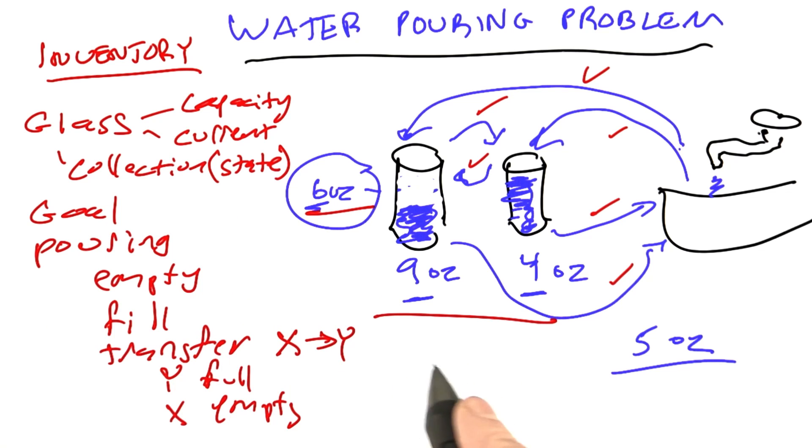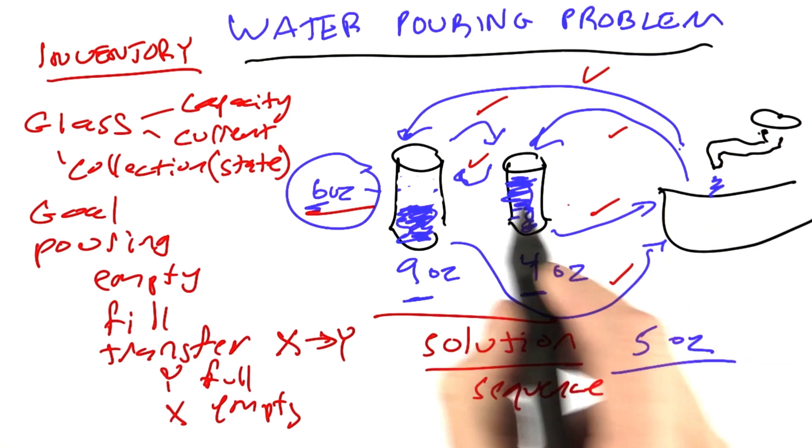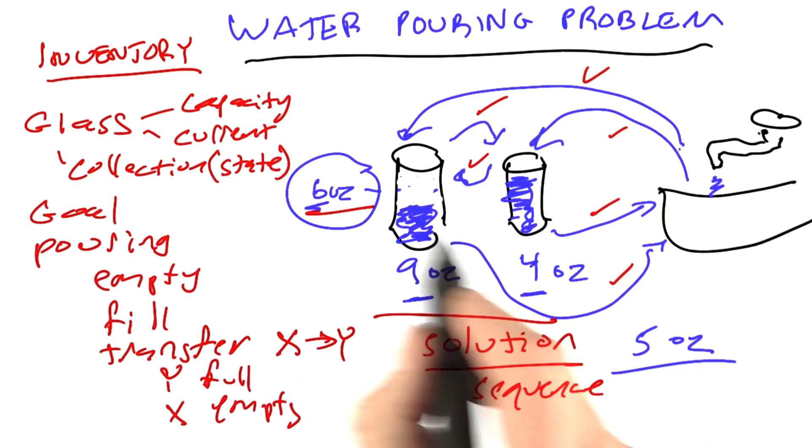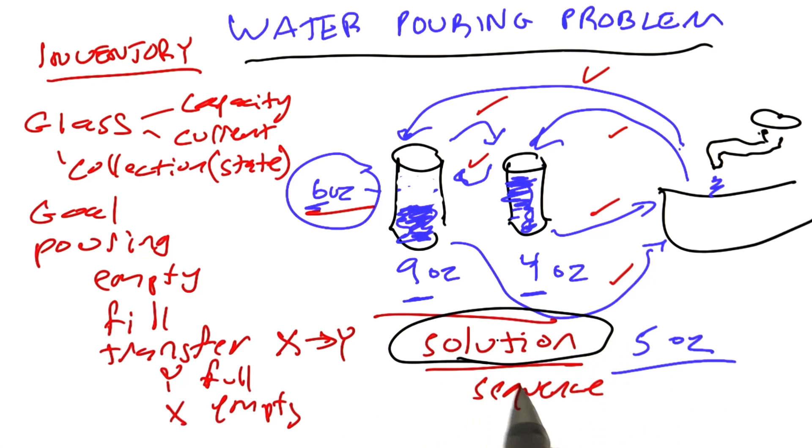Anything else in the inventory? Oh, well, we certainly need a notion of a solution. A solution is going to be a sequence of steps: pour from here to here, then from here to the drain, then fill up, then pour again, and so on. And so what this unit is really all about is techniques for finding these solutions, which are sequences of steps.